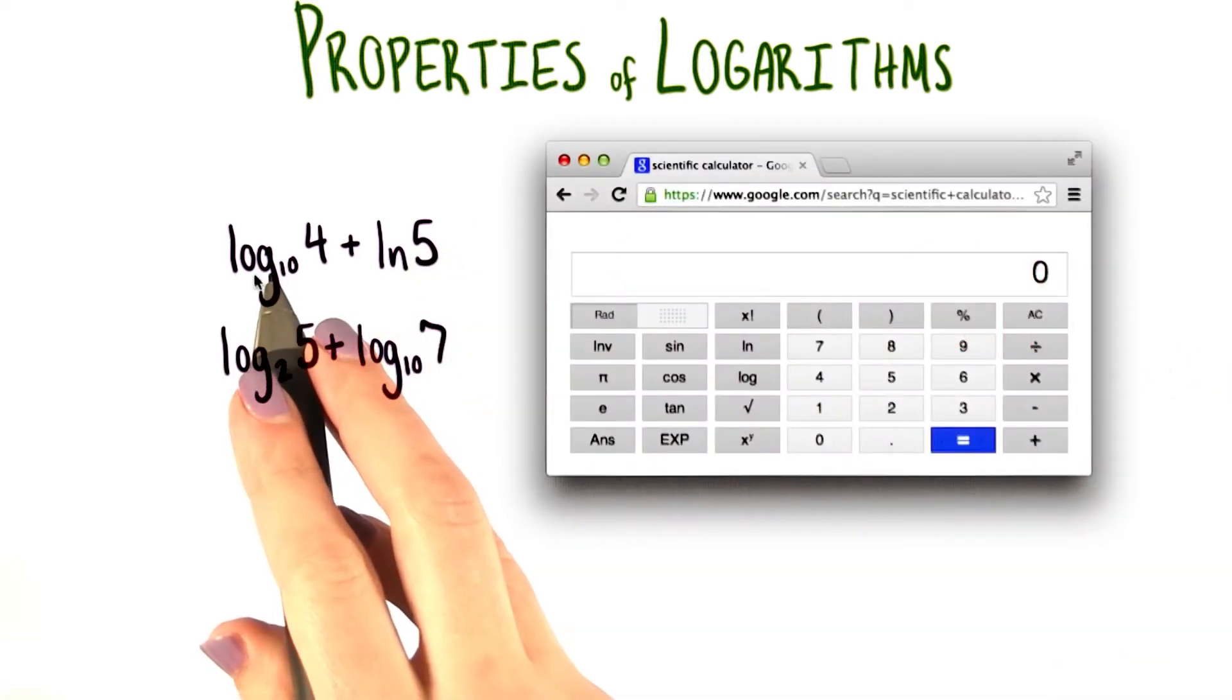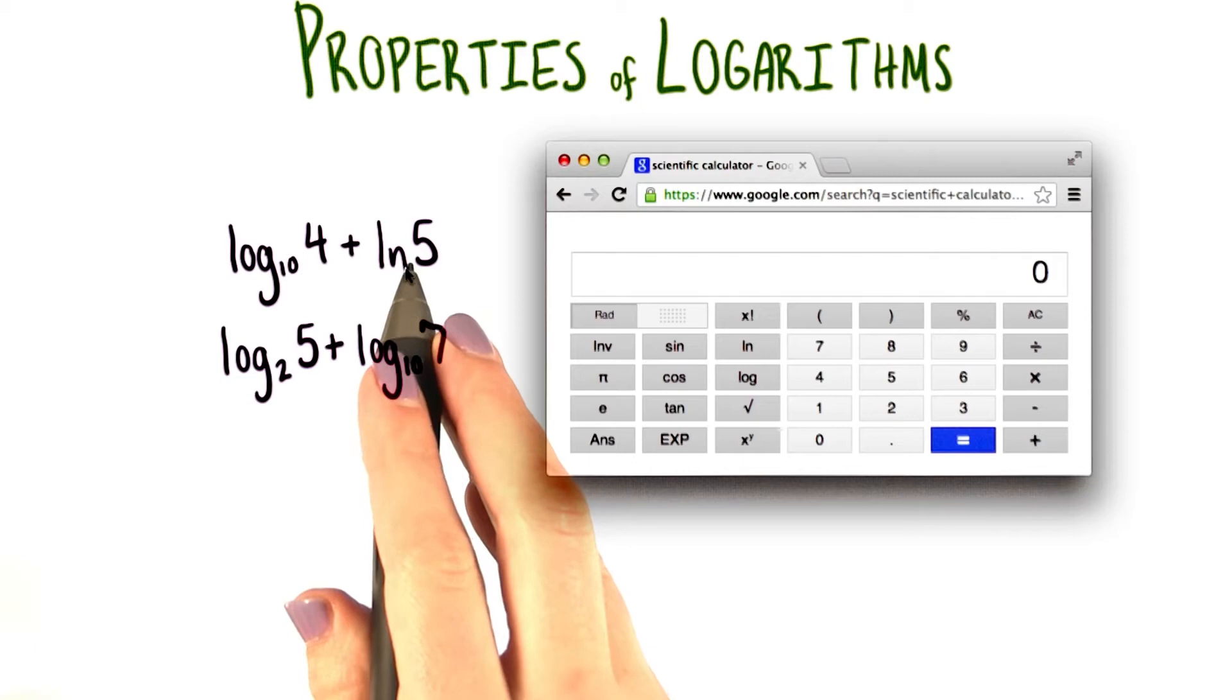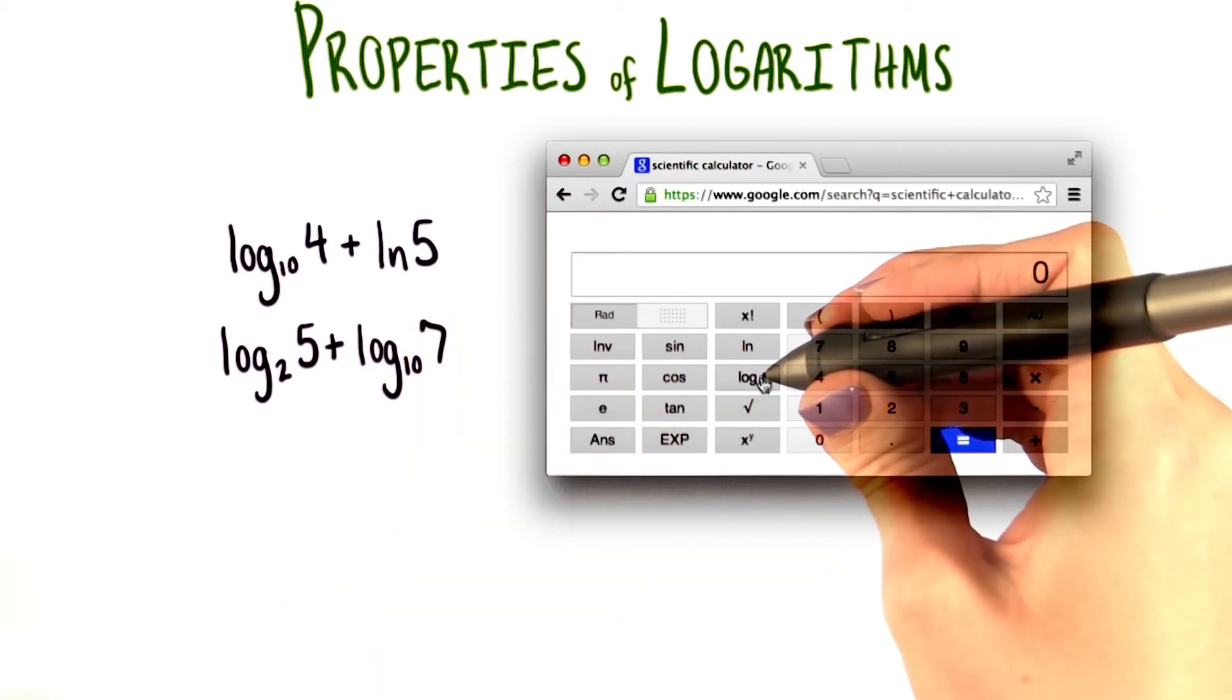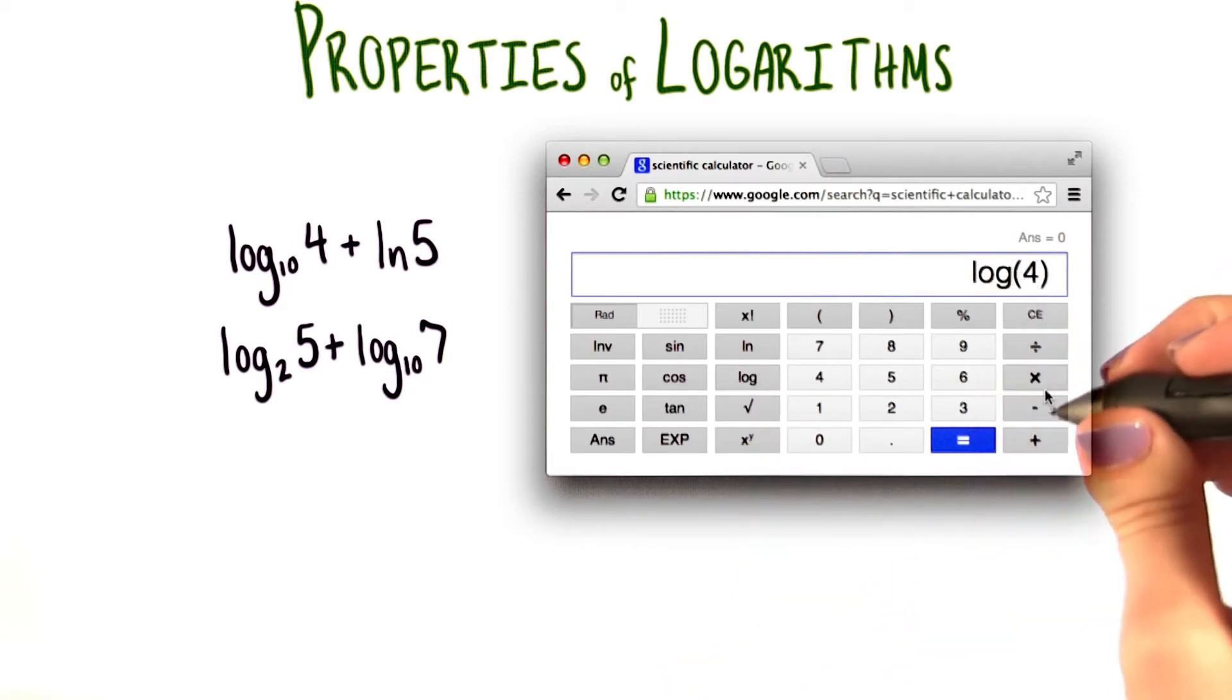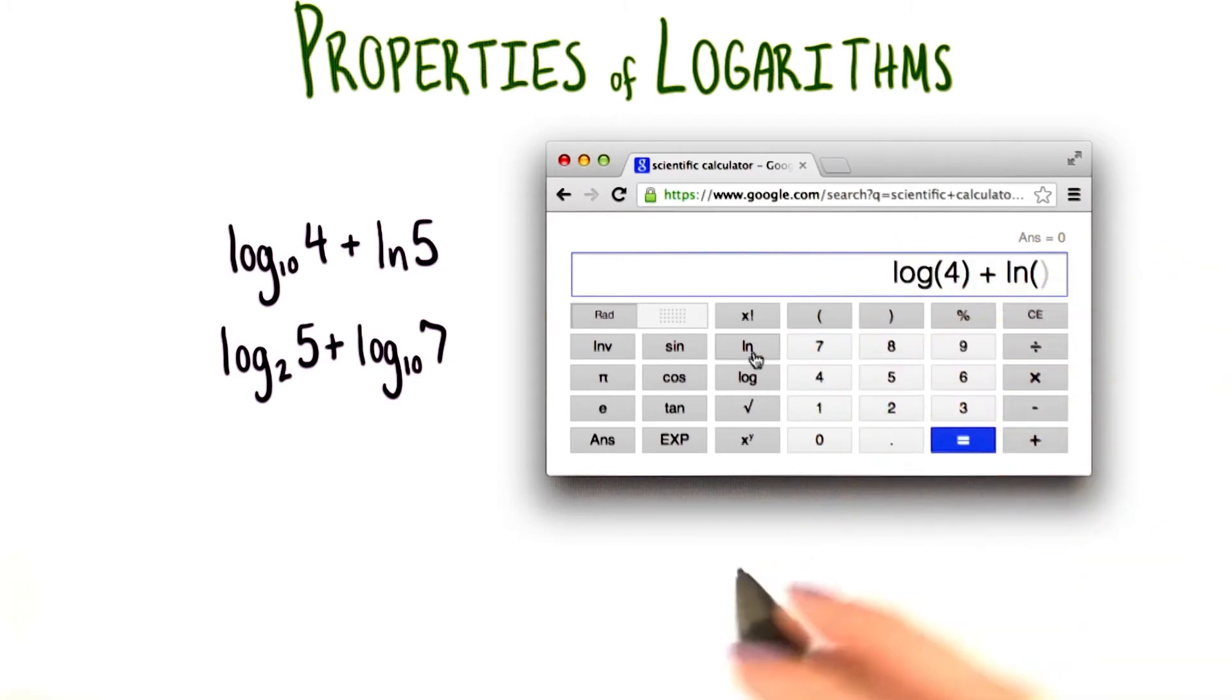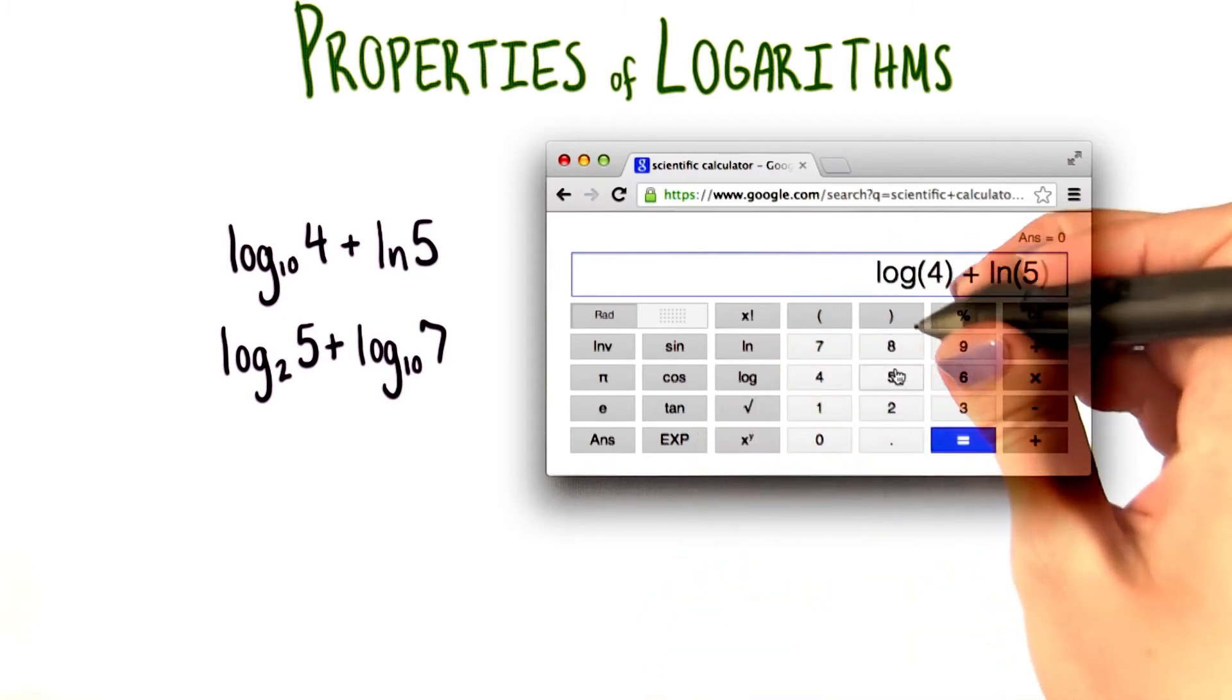To add log base 10 of 4 plus natural log of 5, I start out by pressing the log button since I know this has an implicit invisible 10 as the base. We want log base 10 of 4 plus natural log, so the ln button, of 5.